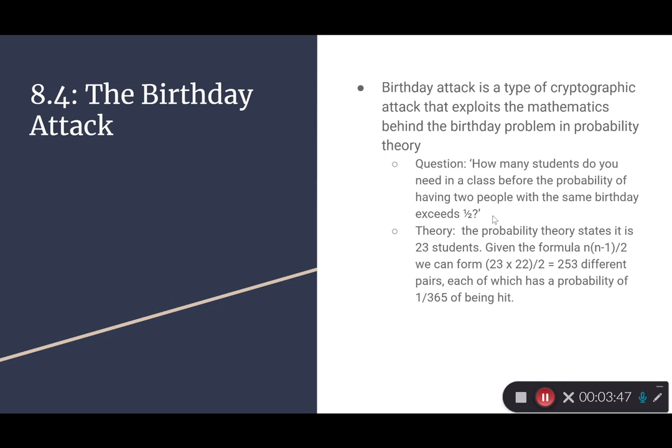And the theory states that that would be 23 students. Given the formula n(n-1)/2, we can form 23 multiplied by 23 minus 1, which is 22, divided by 2, equal to 253 different pairs. Each which has a probability of 1 out of 365 of being hit.